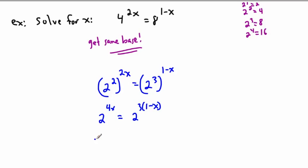Then I just need to deal with this. So 2 to the power of 4x is the same thing as saying 2 to the power of, let's see, 3 times 1 is 3, and minus 3x. I'm just multiplying this out.